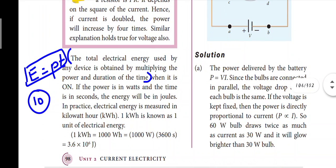Total electric energy is obtained by multiplying power and time. E = P × t. This is the answer for the electric energy part.